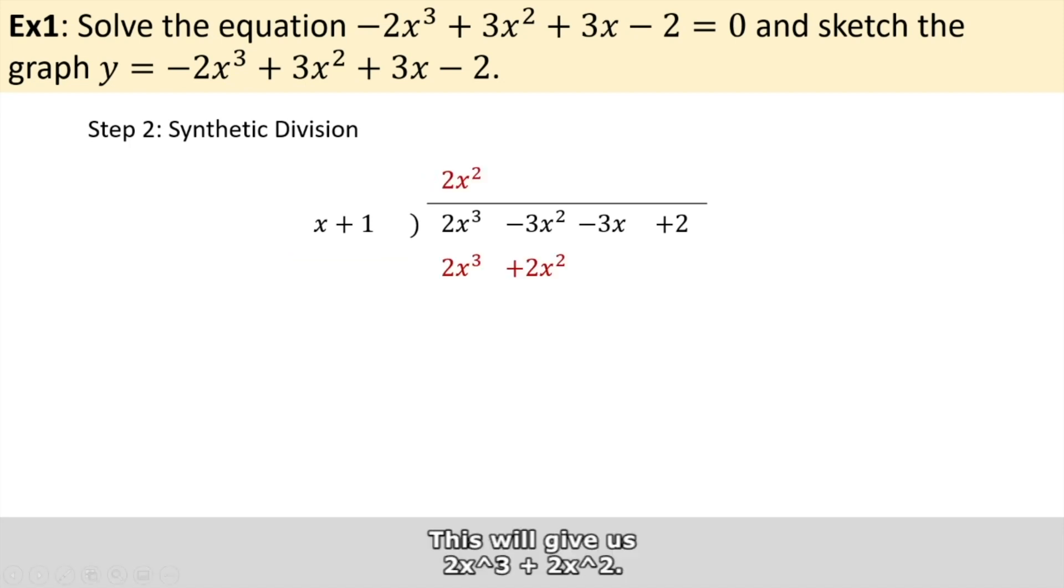This will give us 2x³ plus 2x². If we subtract this from the original expression, we will get -5x² - 3x + 2.